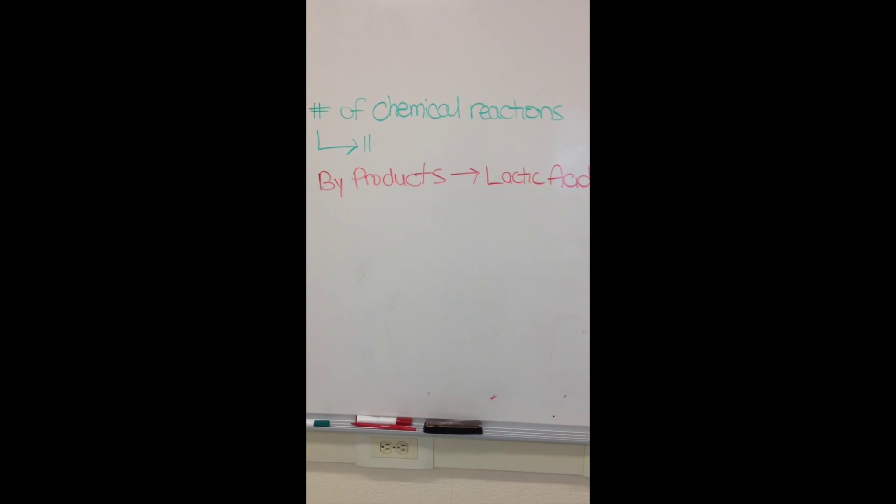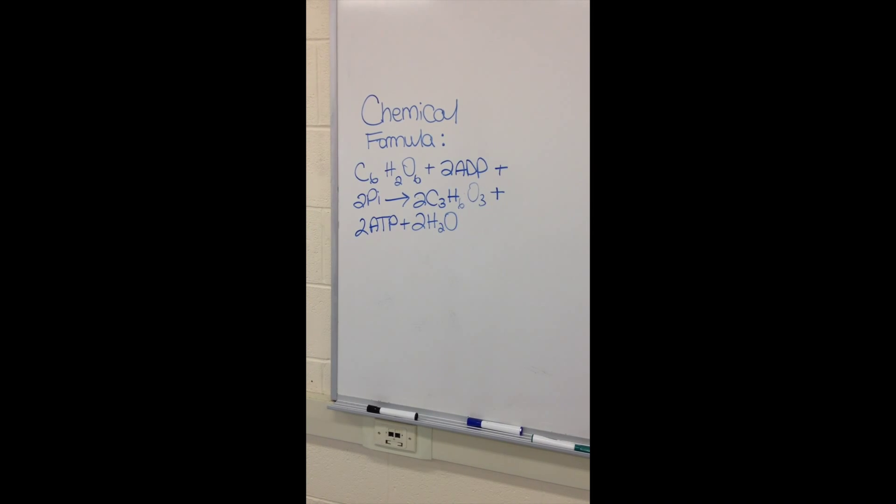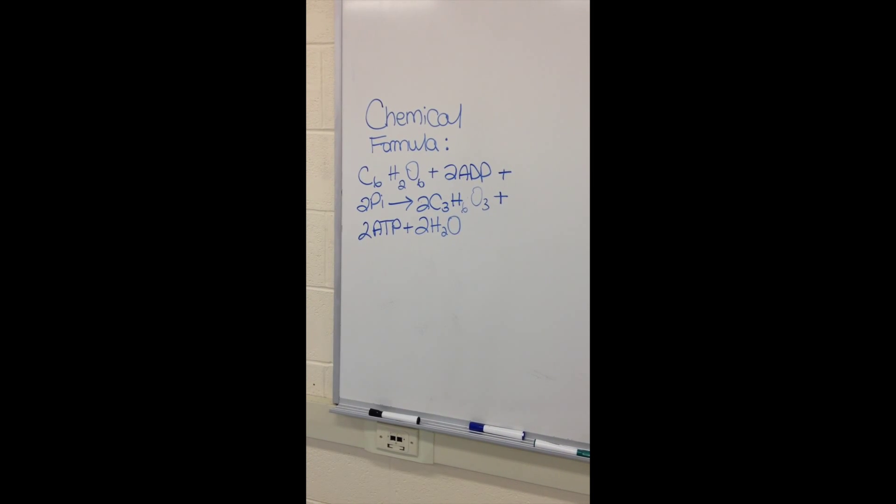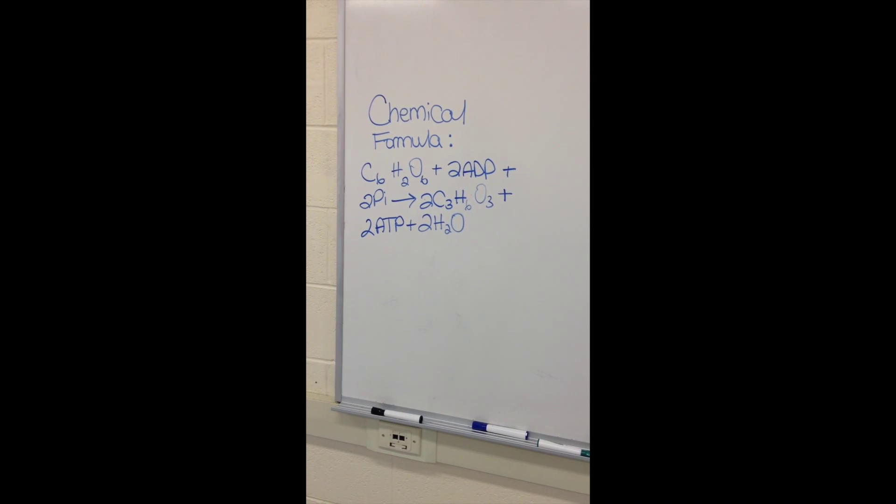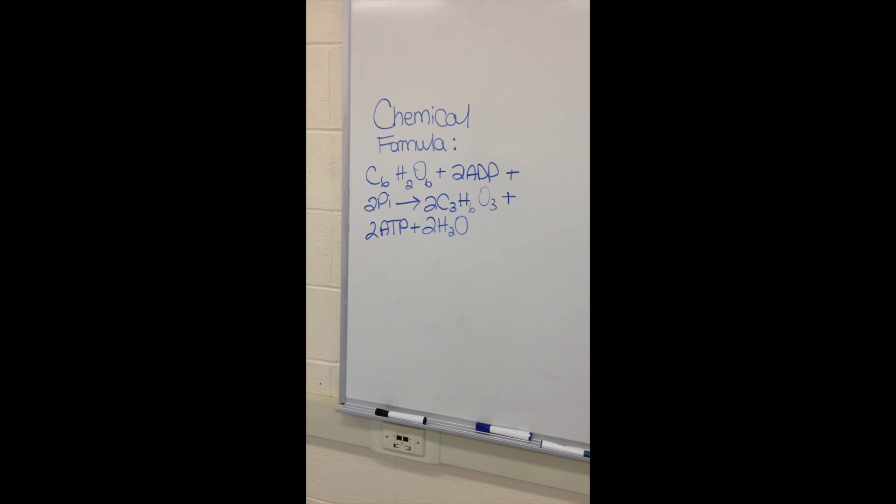For glycolysis, there are two chemical reactions and a byproduct of lactic acid. In glycolysis, the chemical formula is C6H12O6 plus 2ADP plus 2Pi equals 2C3H6O3 plus 2ATP plus 2H2O.